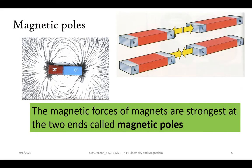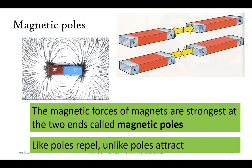Magnetic poles are the magnetic forces of magnets, which are the strongest at the two ends — each of the points near the extremities of the axis of rotation of the Earth or another celestial body, where a magnetic needle dips vertically. Remember that like poles repel and unlike poles attract.